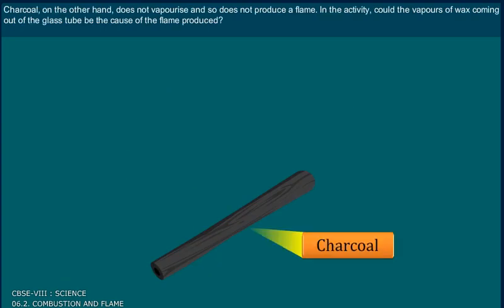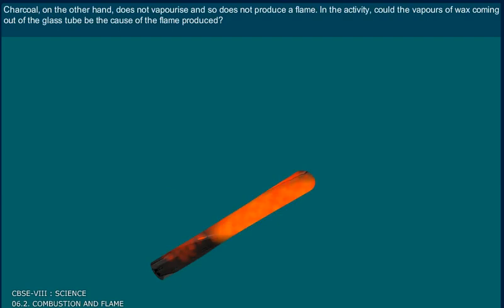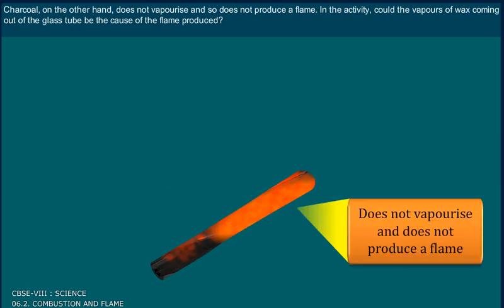Charcoal, on the other hand, does not vaporize and so does not produce a flame. In the activity, could the vapors of wax coming out of the glass tube be the cause of the flame produced?